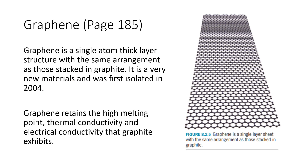Now we are talking about graphene. Graphene is a single-atom-thick layer structure with the same arrangement as found in graphite — one carbon bonded to three other carbons. The key difference between graphite and graphene is that graphene is only a single atom thick, making it extremely thin. It has properties similar to graphite: high melting point, good thermal conductivity, and good electrical conductivity.